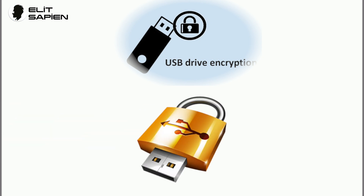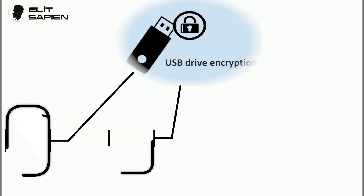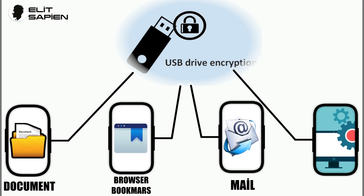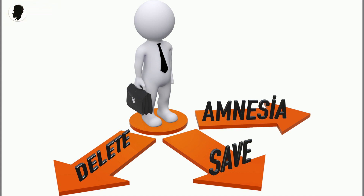You can save some of your files and configuration in an encrypted persistent storage on a USB stick — your documents, browser bookmarks, emails, and even some additional software. Persistent storage is optional and you always decide what is saved permanently.